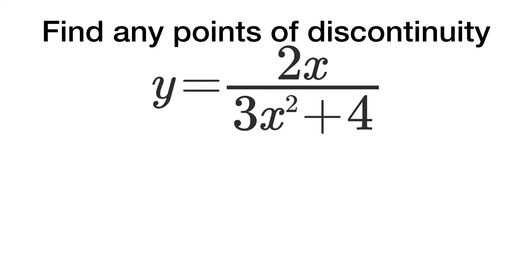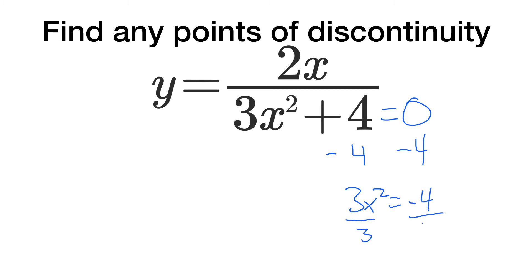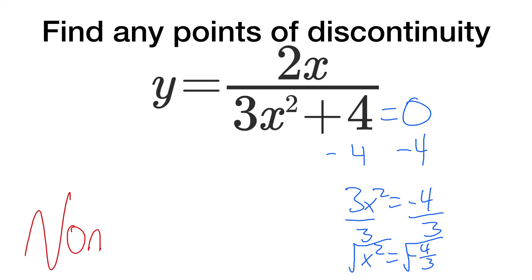For this example, I can't factor easily, so I'll set it equal to zero: 3x squared plus 4 equals 0, so x squared equals negative 4 thirds. Taking the square root of a negative gives imaginary numbers. If the only points of discontinuity are imaginary, they do not actually exist — meaning there are none.